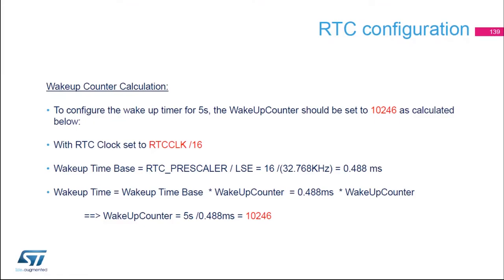Now we're going to configure the RTC. The wake-up counter calculation is as follows: we want a wake-up time of 5 seconds. With the RTC clock set to RTC divided by 16, the wake-up time base is RTC prescaler divided by LSE — which is 16 divided by 32 kHz — equivalent to 0.488 milliseconds. So the wake-up counter equals 5 seconds divided by 0.488 ms, which gives 10,246.